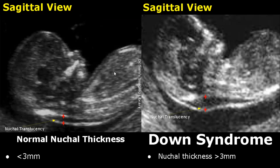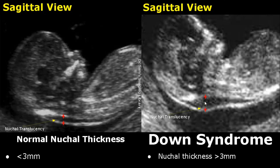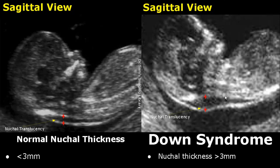This is a normal image of a fetus in the first trimester, showing a normal nuchal thickness. The normal nuchal thickness in the first trimester is less than three millimeters approximately. Over here we have a fetus with increased nuchal thickness — it will be greater than three millimeters in the first trimester. Increased nuchal thickness is a soft marker for Down syndrome.